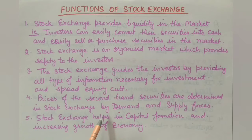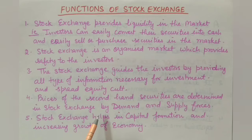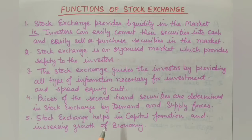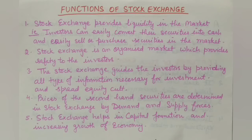Prices of second-hand securities are determined in stock exchanges by demand and supply forces. In the primary market, the company decides the face value of the share or debenture for the first time. After that, once shares or securities are sold, they are repeatedly resold and purchased in the secondary market among investors. The price is determined automatically by the equilibrium of demand and supply forces.